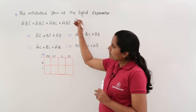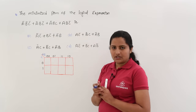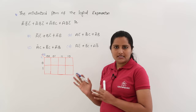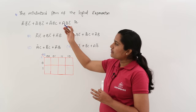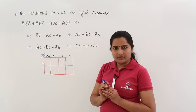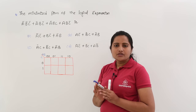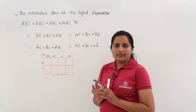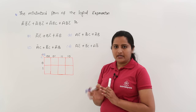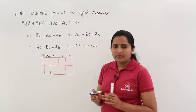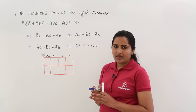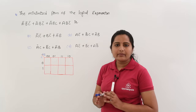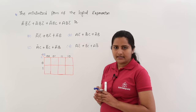By observing this equation, we are having only 3 variables, that is a, b, c. So maximum 3 variable K-map we require, means minimum 3 variable K-map we require. So this is the 3 variable K-map I consider.